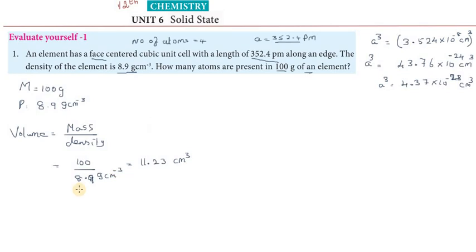Volume of the 100 gram of an element. Then the number of unit cells. Volume we already calculated, a cube. So the total volume divided by volume of the unit cell gives the number of unit cells. Number of unit cells equal to 11.23 total volume divided by volume of a single unit cell, 43.7 into 10 to the power minus 23 centimeter cube.